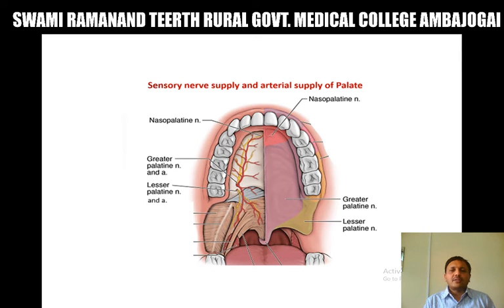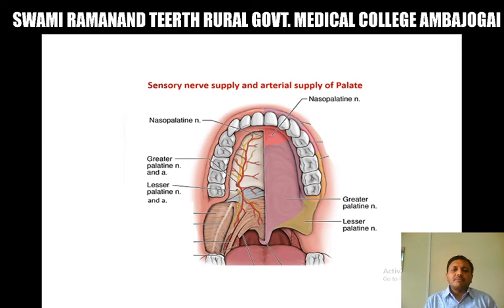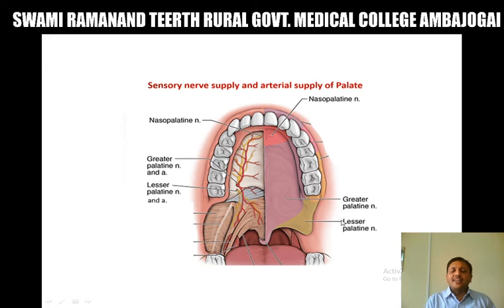Blood supply of the soft palate: it is supplied by the greater palatine artery, lesser palatine artery, nasopalatine artery, and the ascending palatine artery — a branch of the facial artery. Nerve supply of the soft palate — sensory nerve supply: it is supplied by the nasopalatine nerve, greater palatine nerve, and lesser palatine nerve. The lesser palatine nerve carries the sensation of taste as well as secretomotor sensations.